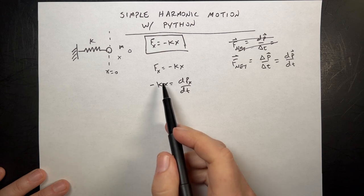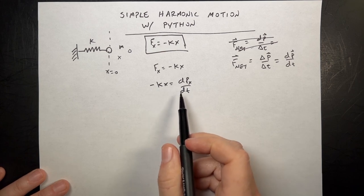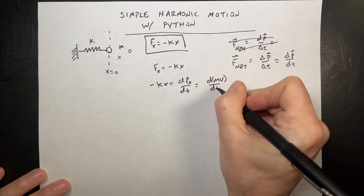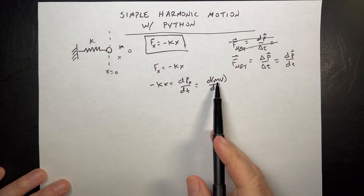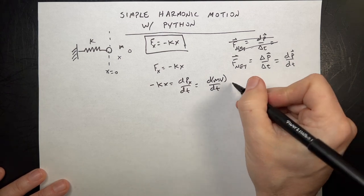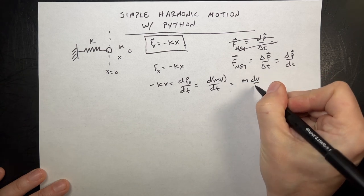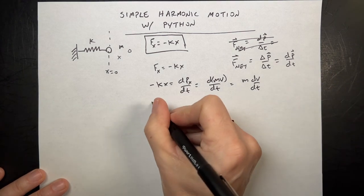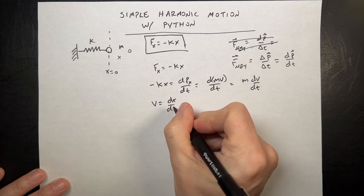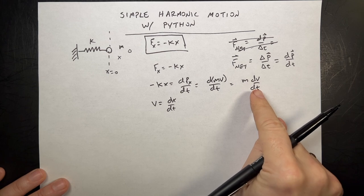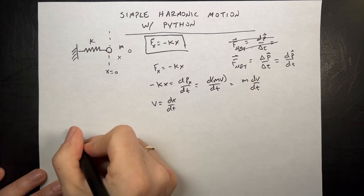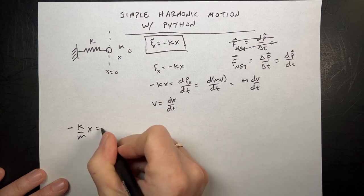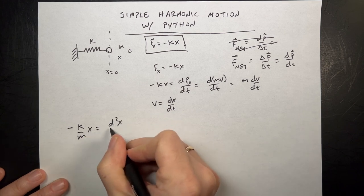That's the only force acting on it. We define the momentum — dropping the x notation — as d(mv)/dt. If the mass is constant, I can bring that out front and it's equal to m dv/dt. That's the derivative of the velocity. Now we also have the definition that velocity in the x direction is the derivative of position with respect to time. So that means I'm taking the derivative of a derivative, which is a second derivative. Dividing both sides by mass, I get the very important equation: negative k/m times x equals the second derivative of x with respect to time.